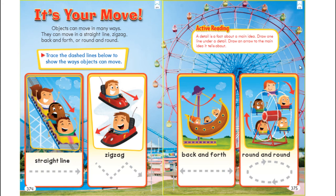Objects can move in many ways — in a straight line, zigzag, back and forth, or round and round. We have four pictures of four different types of movement. The first is a straight line — trace the line and draw a bigger arrowhead. Moving in a zigzag is like making an angle between each movement, like when you walk the zigzag line in PE class.